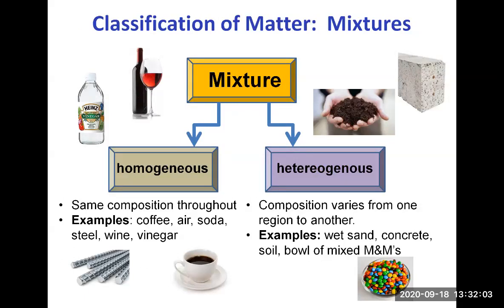Mixtures can also be further classified into homogeneous or heterogeneous mixtures. Homogeneous — homo means the same — so a homogeneous mixture looks the same throughout, with the same composition throughout. You cannot tell that it's a mixture just by looking at it; it looks like one thing. For example, coffee: we know it's not just water, it's water with caffeine and maybe other molecules, but it looks like one black liquid.